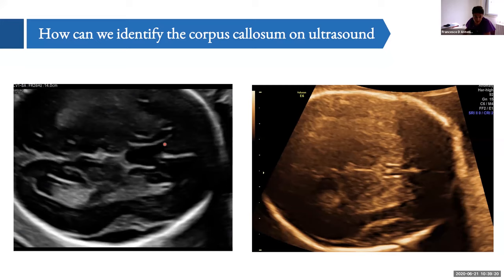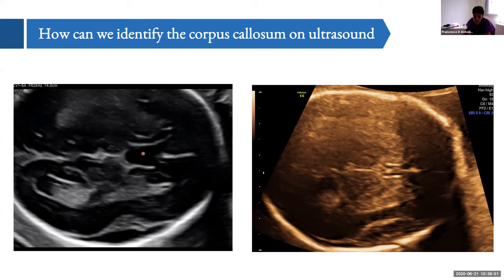During the routine anomaly scan we usually do not achieve the sagittal view, so the indirect way to assess the corpus callosum is to look at the anterior complex of the brain. We see three main structures: the cavum septum pellucidum and the two frontal horns. The cavum septum pellucidum is the anechoic square-box structure in the anterior part of the brain, covered superiorly by the corpus callosum, which forms its roof. By convention, if the cavum septum pellucidum is present, the corpus callosum should also be present — though this is not always true.